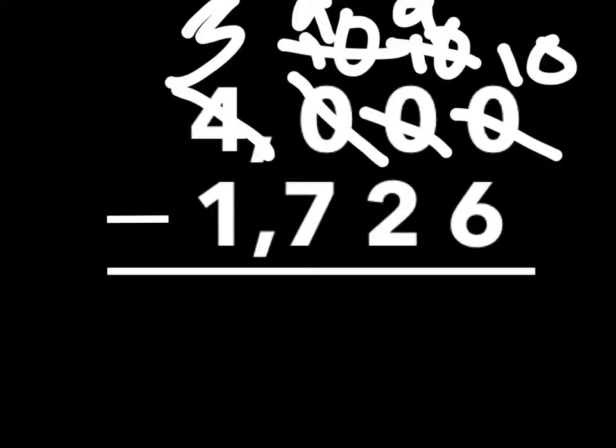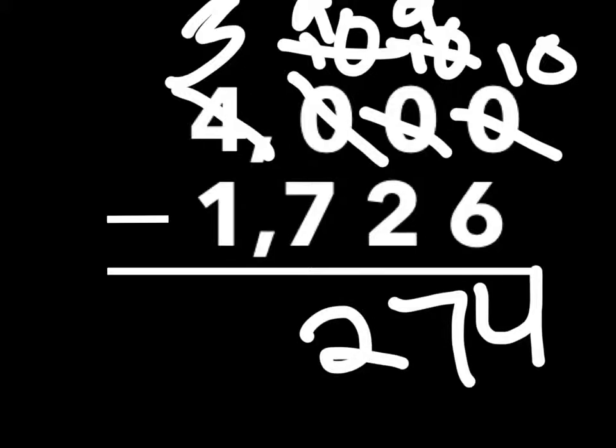10 minus 6 equals 4, 9 minus 2 equals 7, 9 minus 7 equals 2, 3 minus 1 equals 2. So,